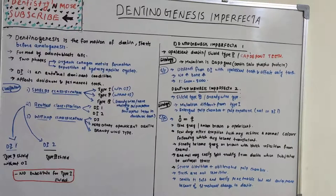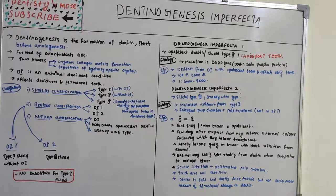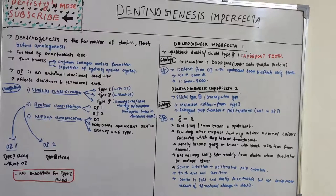Dentinogenesis imperfecta is an autosomal dominant condition affecting both deciduous and permanent teeth. Moving on to the classification, the most common is Shields classification, followed by a revised classification and Widcock classification. Shields classification is the most commonly accepted and used one.